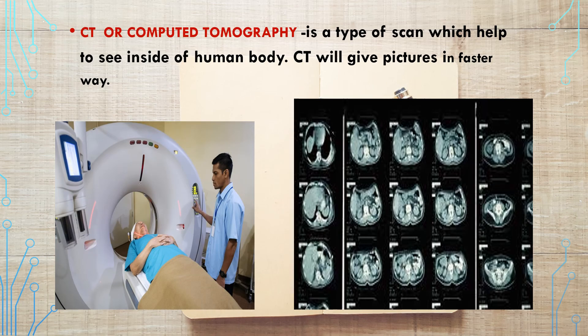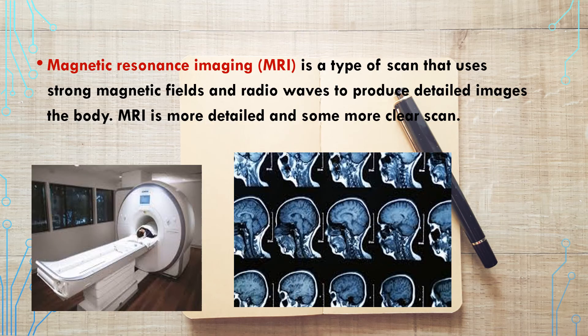Another detailed test is CT, or computerized tomography. It is a type of scan that helps to see inside the human body and gives pictures in a faster way. Apart from that, magnetic resonance imaging or MRI may also be done. MRI uses a strong magnetic field and radio waves to produce detailed, clear images of the body.